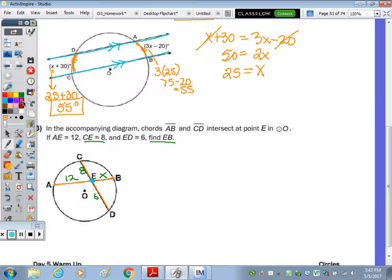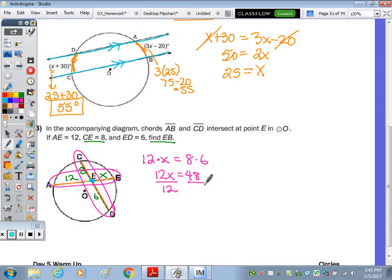is the segments of 1 chord, so the 12 and the X. The product of those 2, so we multiply 12 times X, that's equal to the product of the segments of the other chord. So that's 8 times 6, 12 times X is 12X, and 8 times 6 is 48. Divide by 12, and X is equal to 4. We have to find EB, EB was X, so EB is equal to 4.